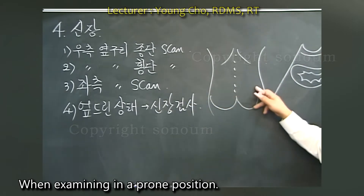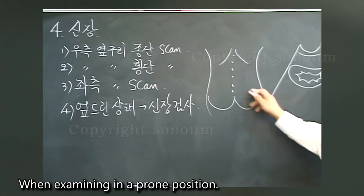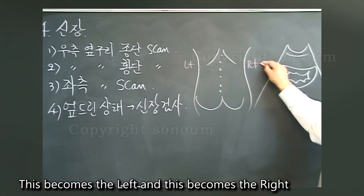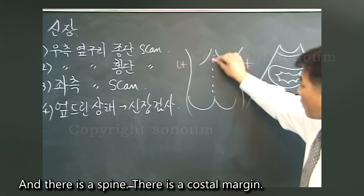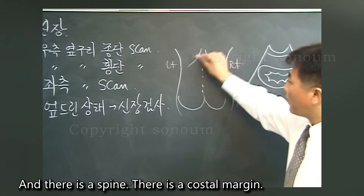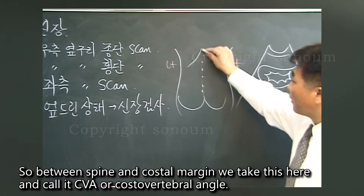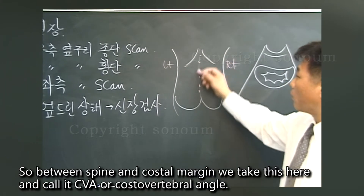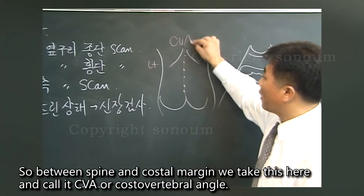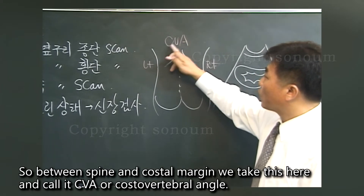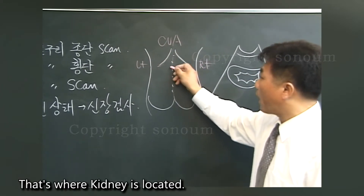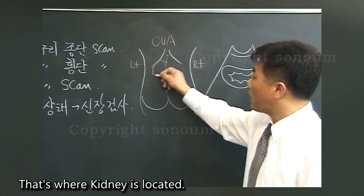When examining in a prone position, this becomes the left and this becomes the right. There is a spine and a costal margin. Between the spine and costal margin, we identify this area and call it CVA, or costovertebral angle. That's where the kidney is located.